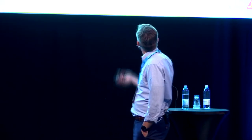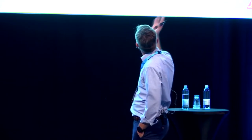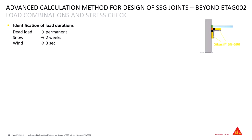Coming now to this theoretically — here just as an example, it could be a glass roof where you have dead load, snow load, and wind load acting on. And you see these three loads all have different durations: one is permanent, one is a kind of mid-term acting over weeks, and the other — the final one — just seconds, a wind gust for example.